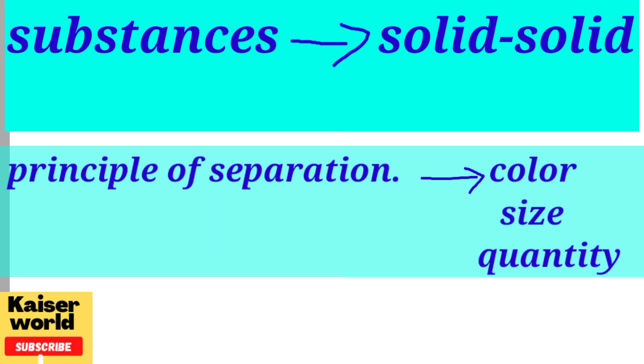The principle of separation for handpicking is based on color, size, and quantity. Based on these properties, you can do handpicking.